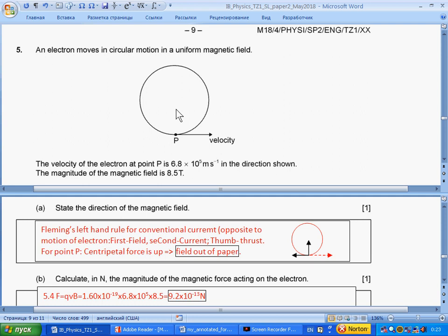Thrust is towards the center. Second finger to the left, then field will be out of paper. First finger is field, second finger conventional current, thumb thrust. As result, we get out of paper.